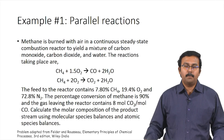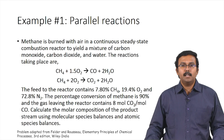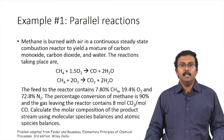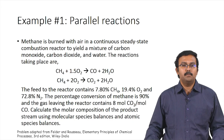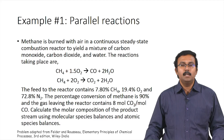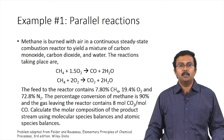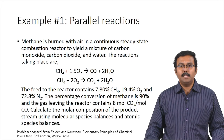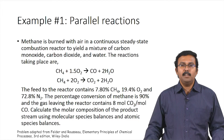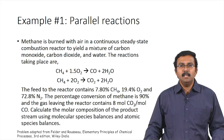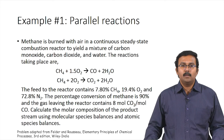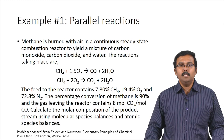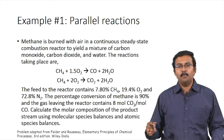Let us start with the first example problem. Methane is burnt with air in a continuous steady-state combustion reactor to yield a mixture of carbon monoxide, carbon dioxide, and water. The two reactions are: CH₄ + O₂ → CO + H₂O, and CH₄ + O₂ → CO₂ + H₂O. The feed contains 7.8% methane, 19.4% oxygen, and 72.8% nitrogen. Methane conversion is 90%, and the gas leaving contains 8 moles of CO₂ per mole of CO. We must calculate the molar composition of the product stream using both molecular species balances and atomic species balances.